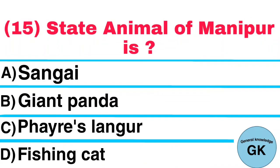Question Number 15. State Animal of Manipur is: A. Sangee, B. Giant Panda, C. Fares Lingur, D. Fishing Cat. Answer: Sangee.